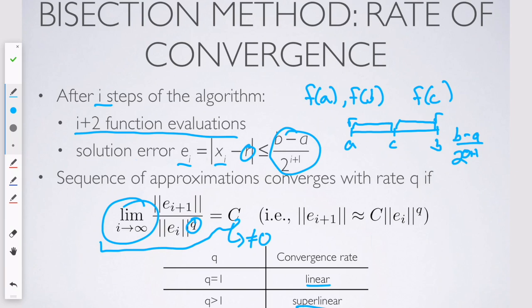And if you take q smaller than one, you're not going to get a constant. So there's just one value of q that lets you get out a non-zero constant. And that's called the convergence rate.